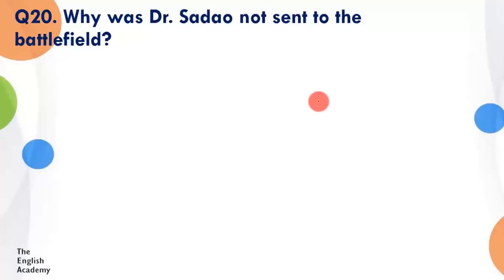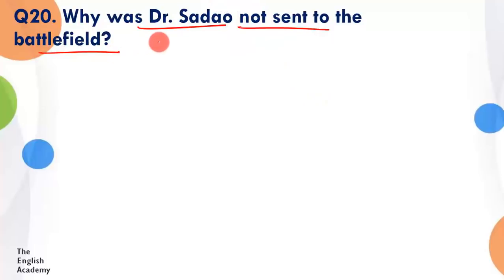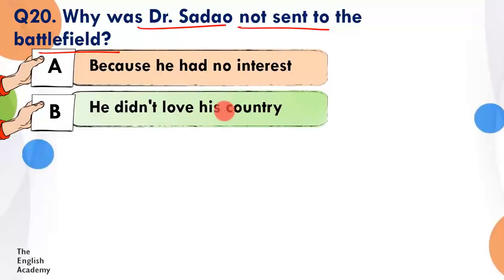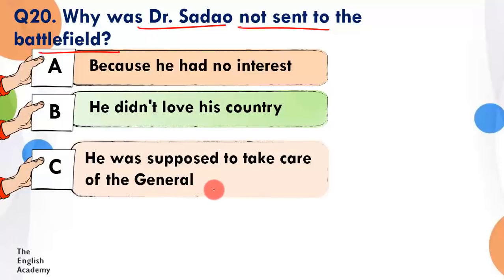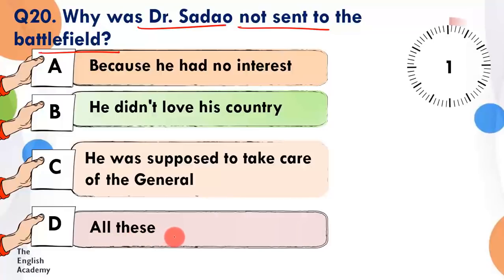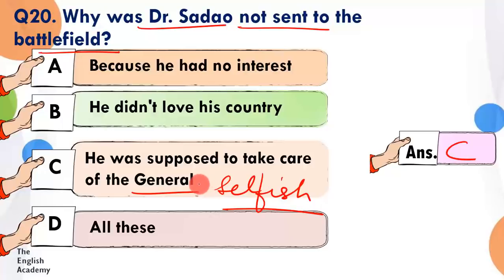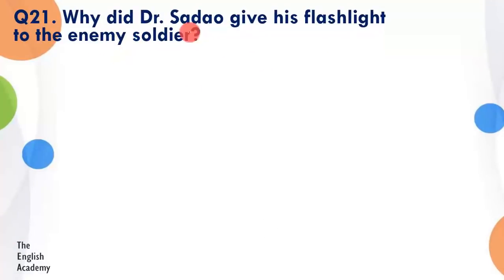Question number 20: Why was Dr. Sadao not sent to the battlefield? Option A: he had no interest. Option B: he didn't love his country. Option C: he was supposed to take care of the general. Option D: all of these. The answer is Option C — the general was a selfish man, woh Dr. Sadao ki treatment lena chahta tha, woh pain mein tha, aur kabhi bhi problem mein aa sakta tha — isliye usne Dr. Sadao ko war front pe nahi bheja taaki agar zarurat pade toh woh wahan ho.